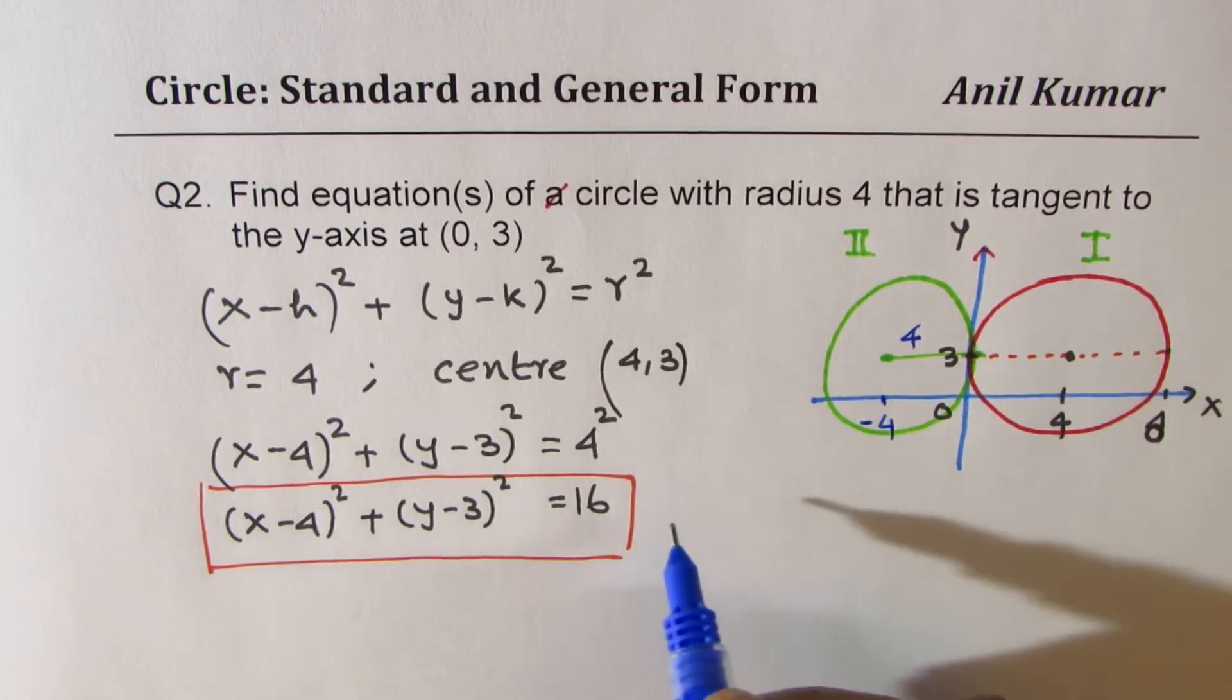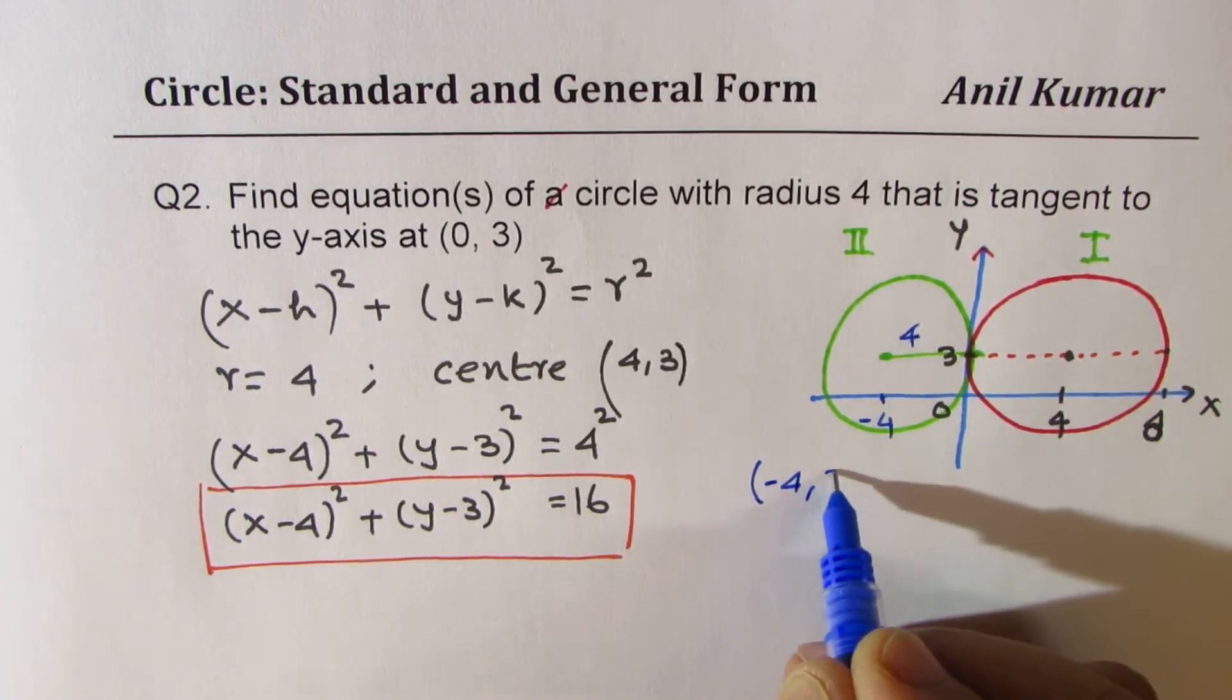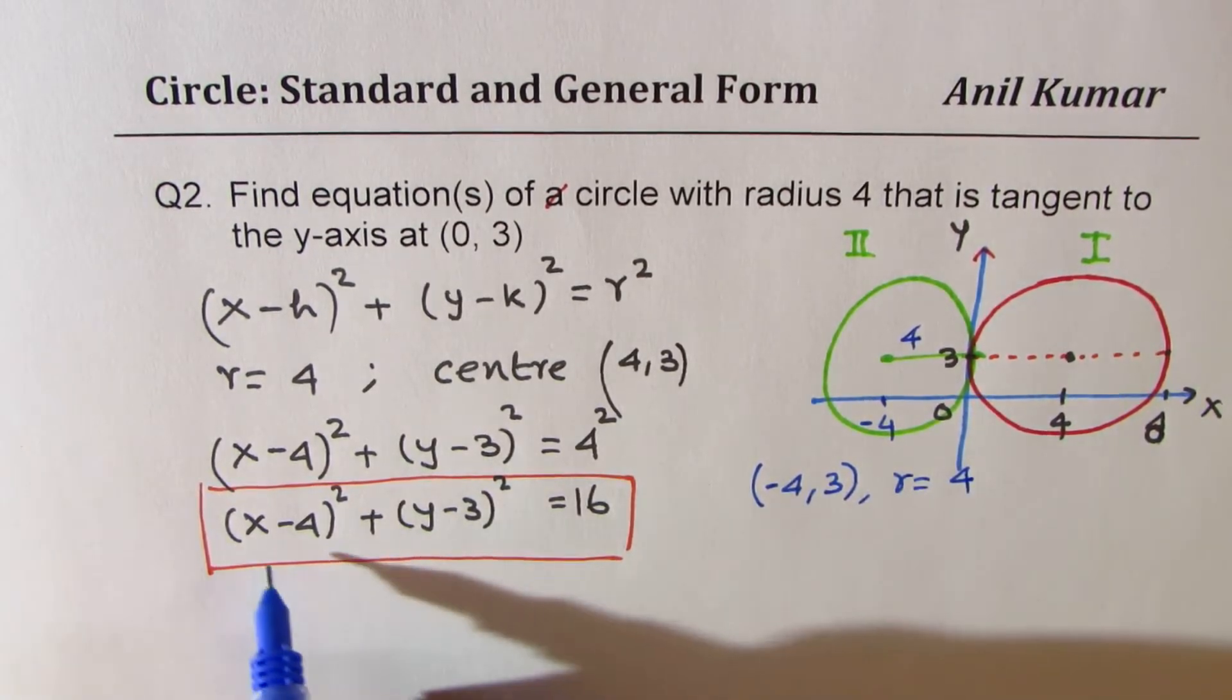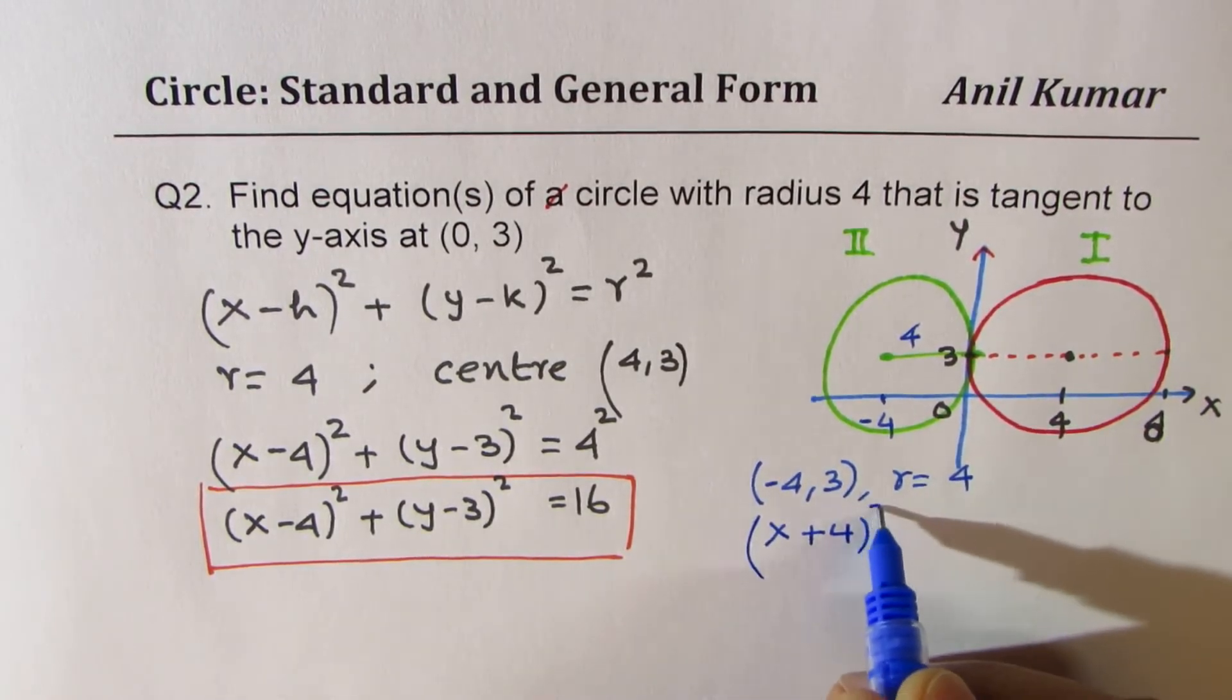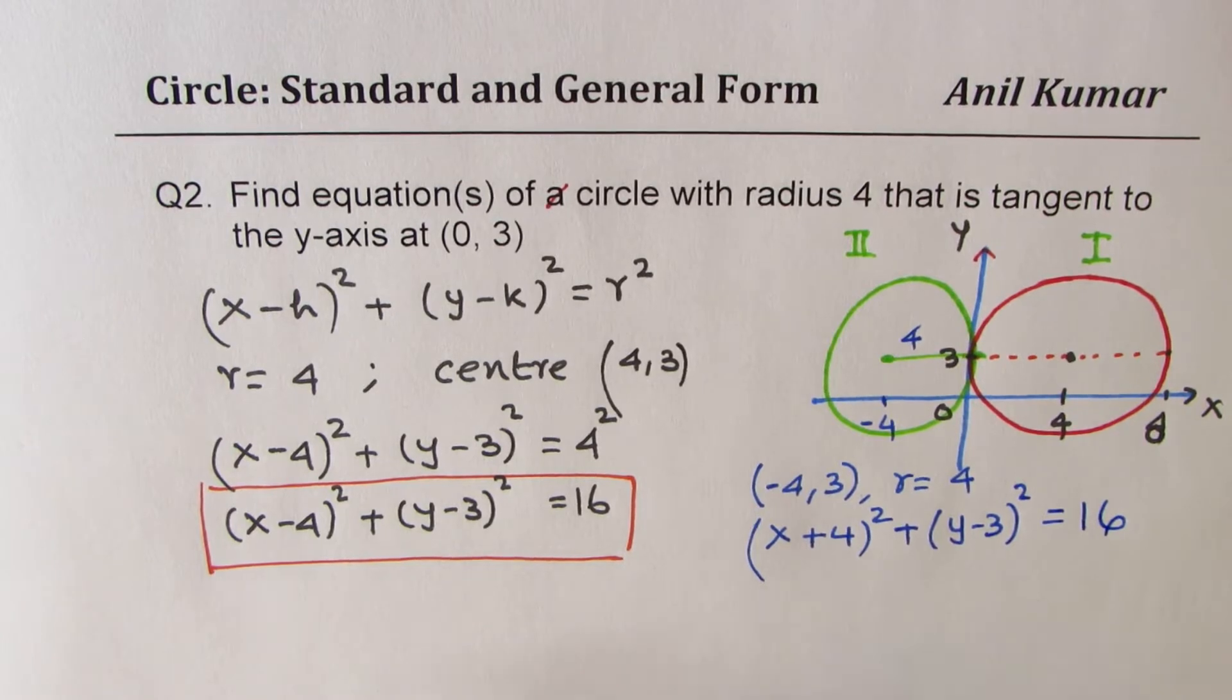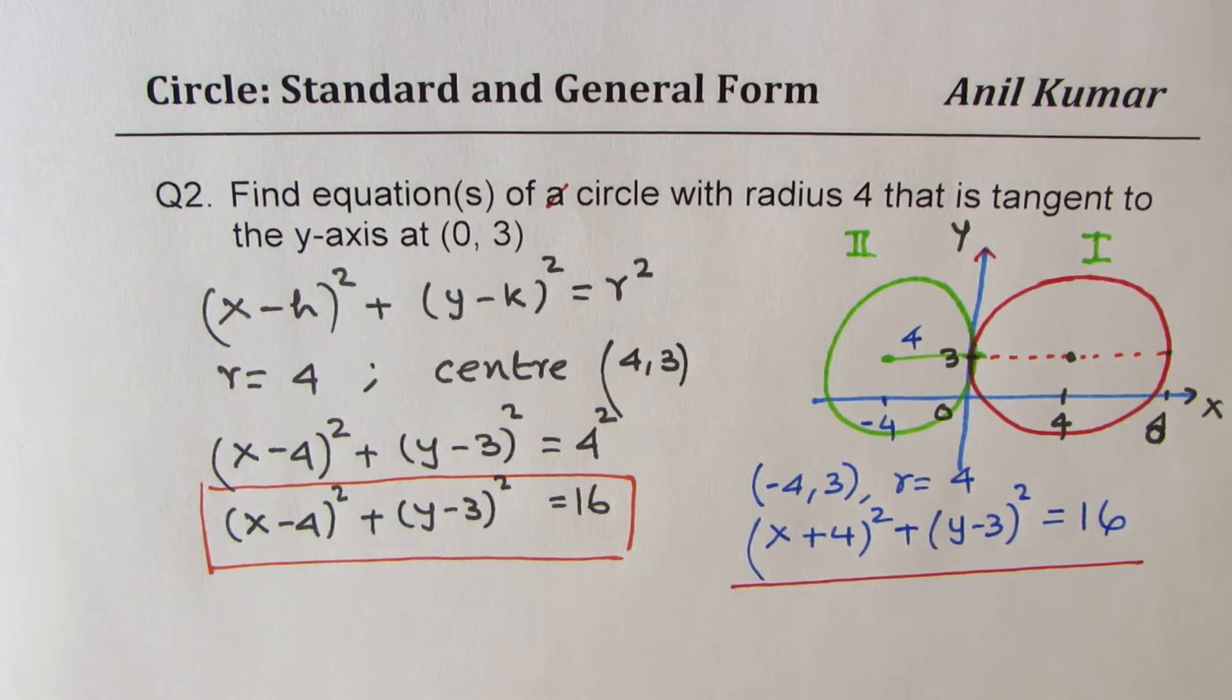So for the second circle, we get the center at (-4, 3), and we have r = 4 as given to us. We can again write down the equation in this form, which is (x + 4)² + (y - 3)² = 16. Does it make sense to you? So that is how we get both the equations. So I hope this concept is clear. So over the given conditions, we could get two equations of circle.